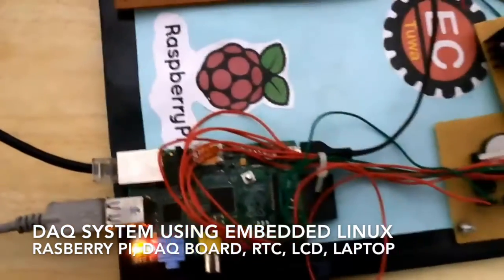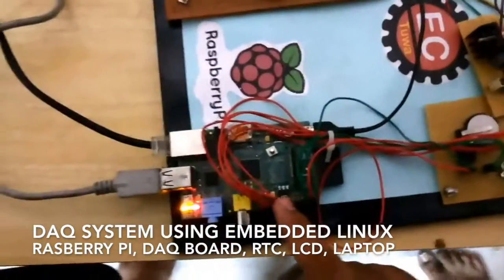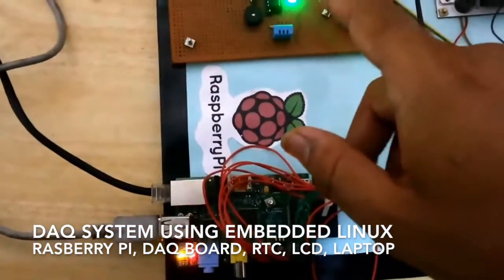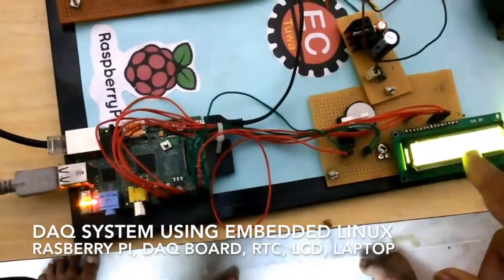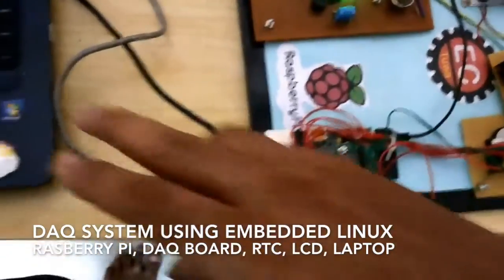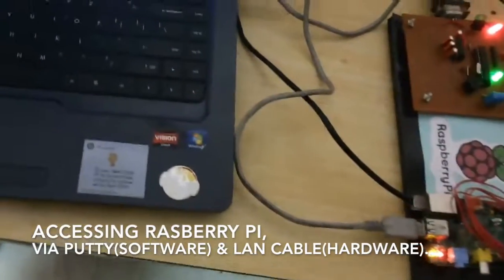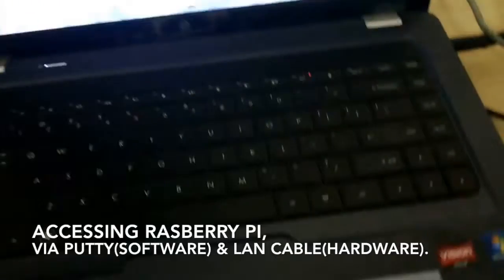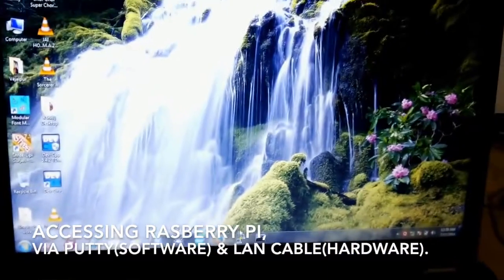This is my project: data acquisition using embedded Linux. This is the Raspberry Pi model, this is the data acquisition board, RFID, the real time clock, and the LCD. All these things are connected to the laptop via this ethernet cable. Now we're accessing Raspberry Pi.